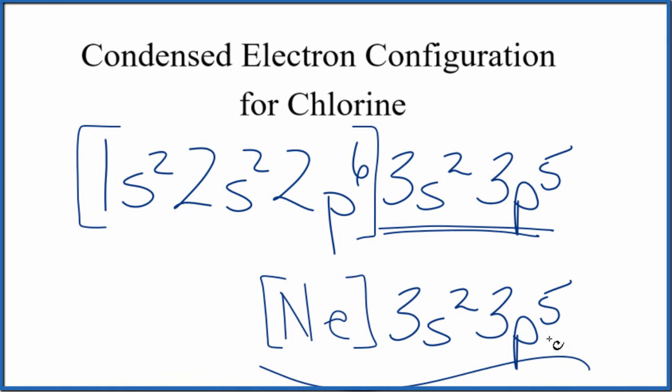And this is the condensed electron configuration for chlorine. We have neon, which is written out here, and then we have the end of that, the highest energy level.